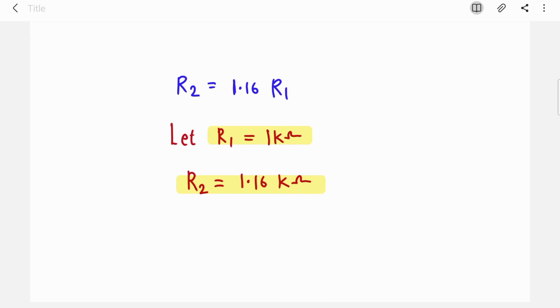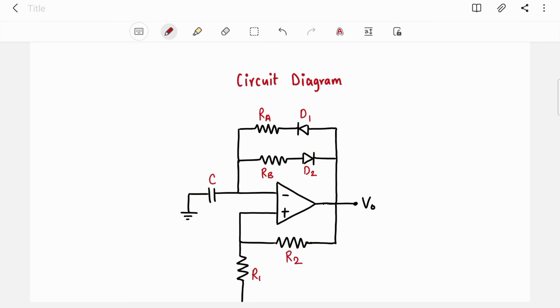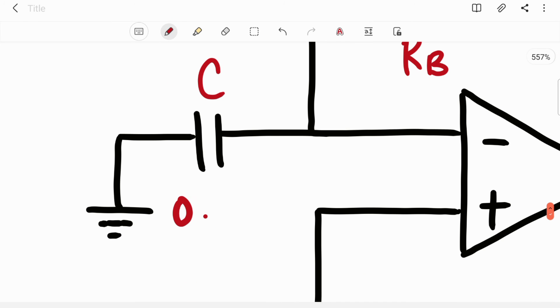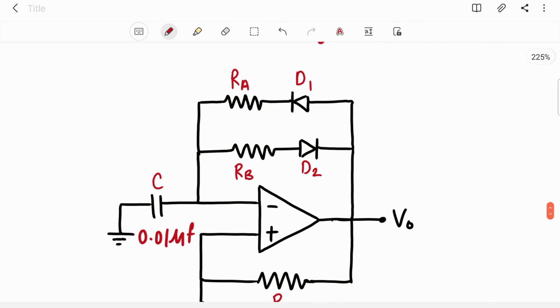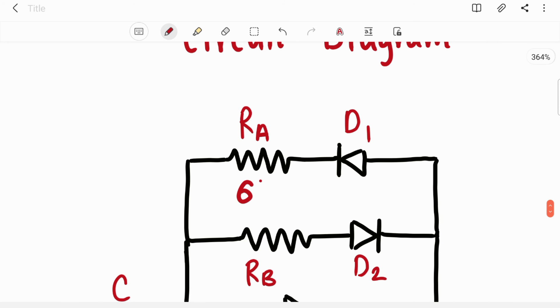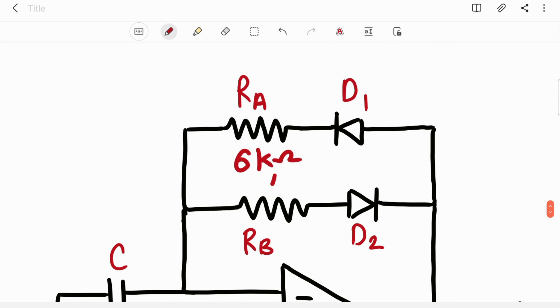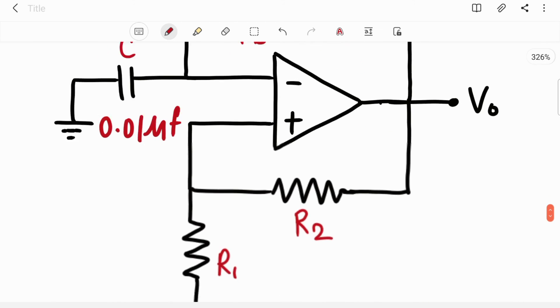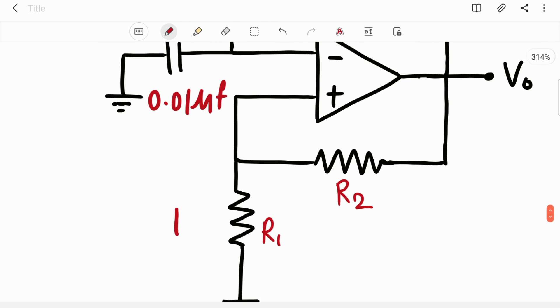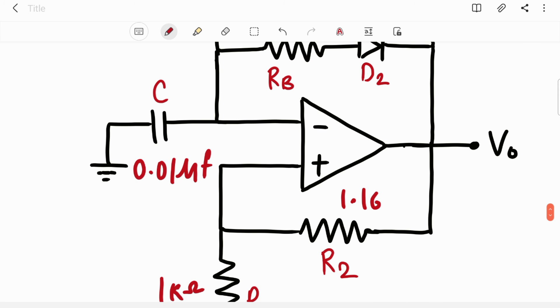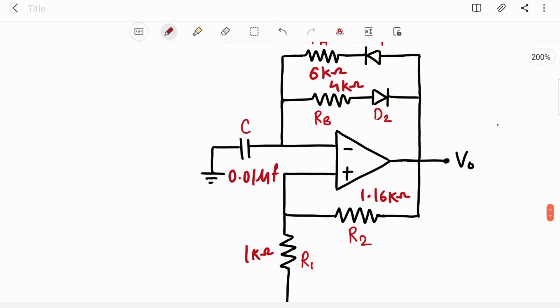So we got all the values. Now the last step is you just have to write down all the values here. Capacitor is 0.01 microfarad, then RA is 6 kilo-ohms, RB is 4 kilo-ohms, R1 is 1 kilo-ohm, and R2 is 1.16 kilo-ohms.